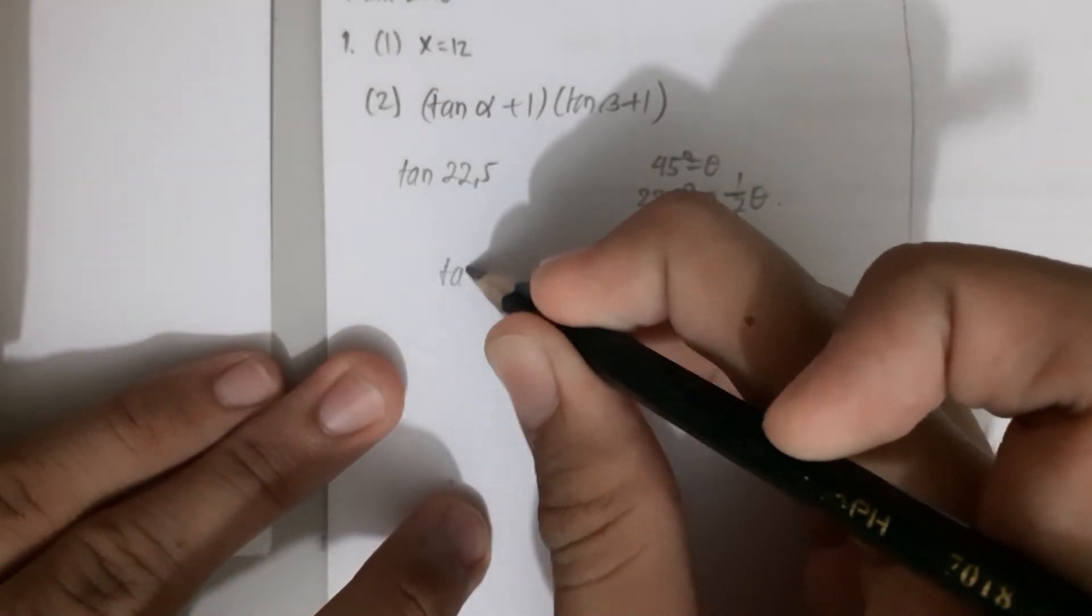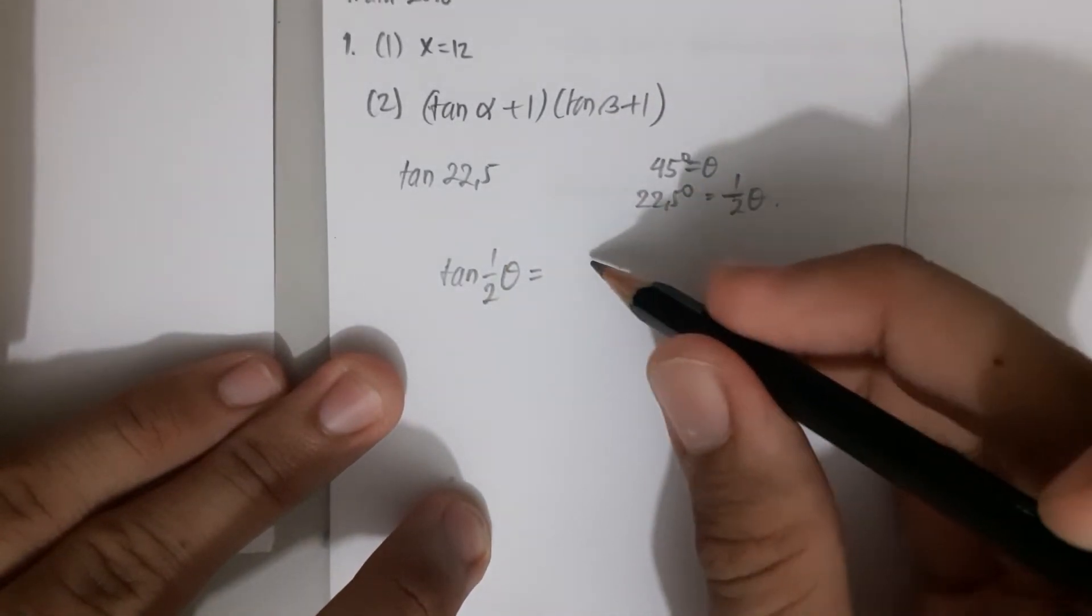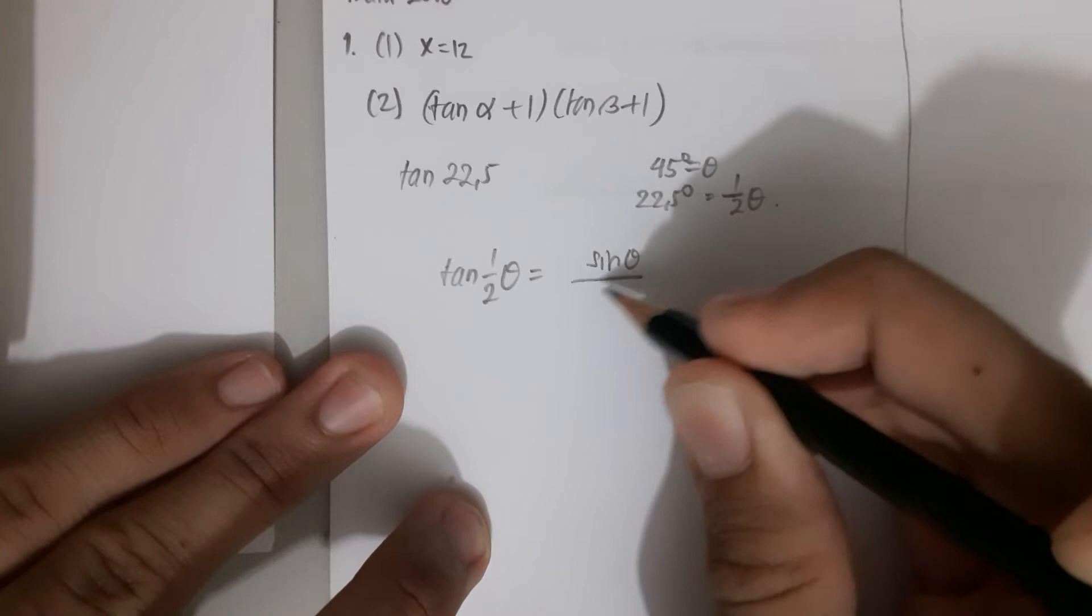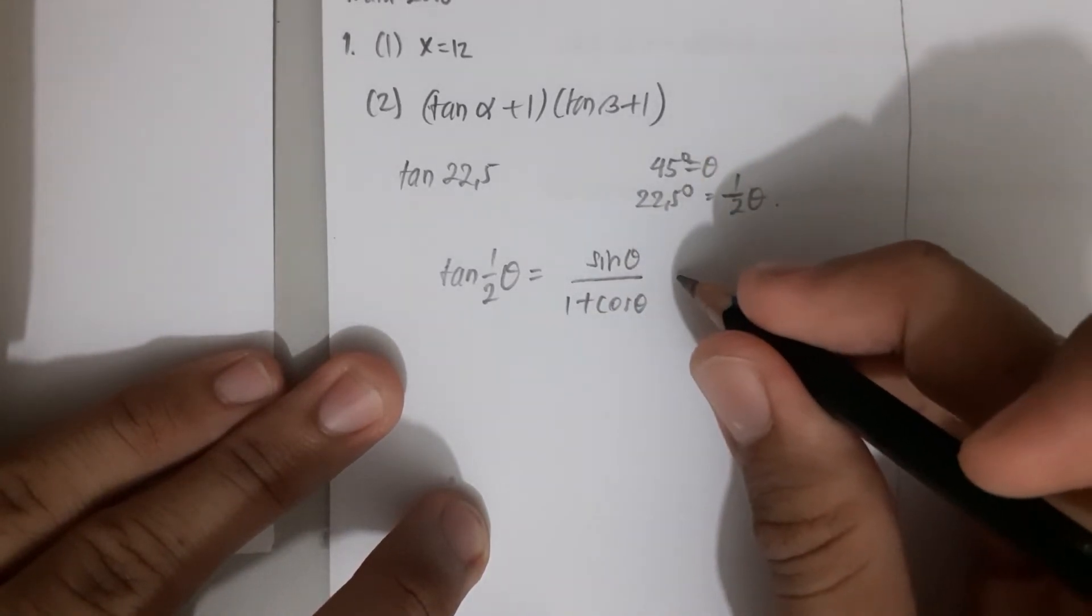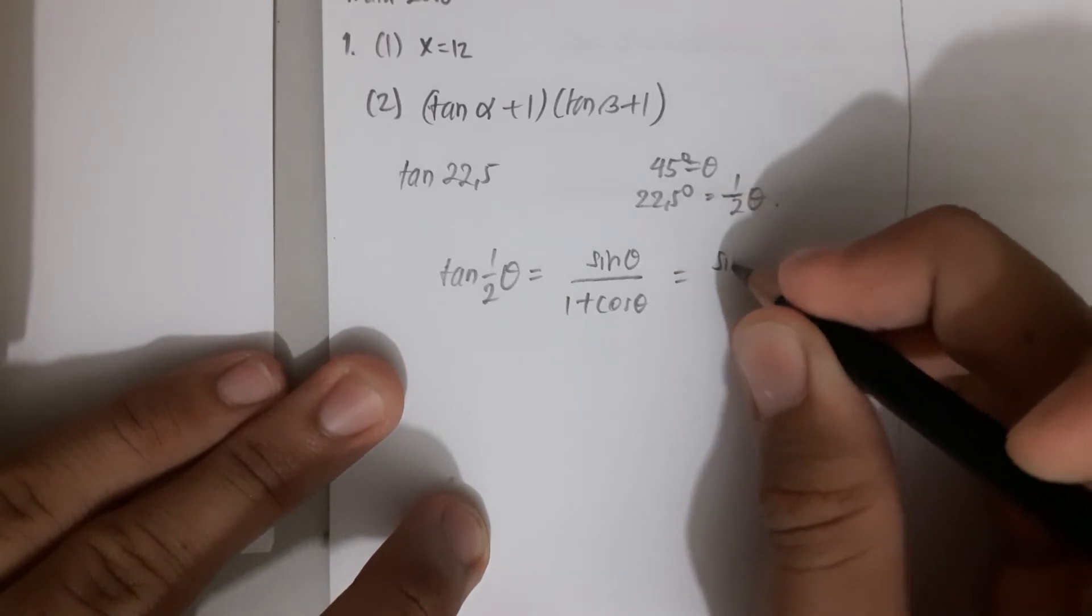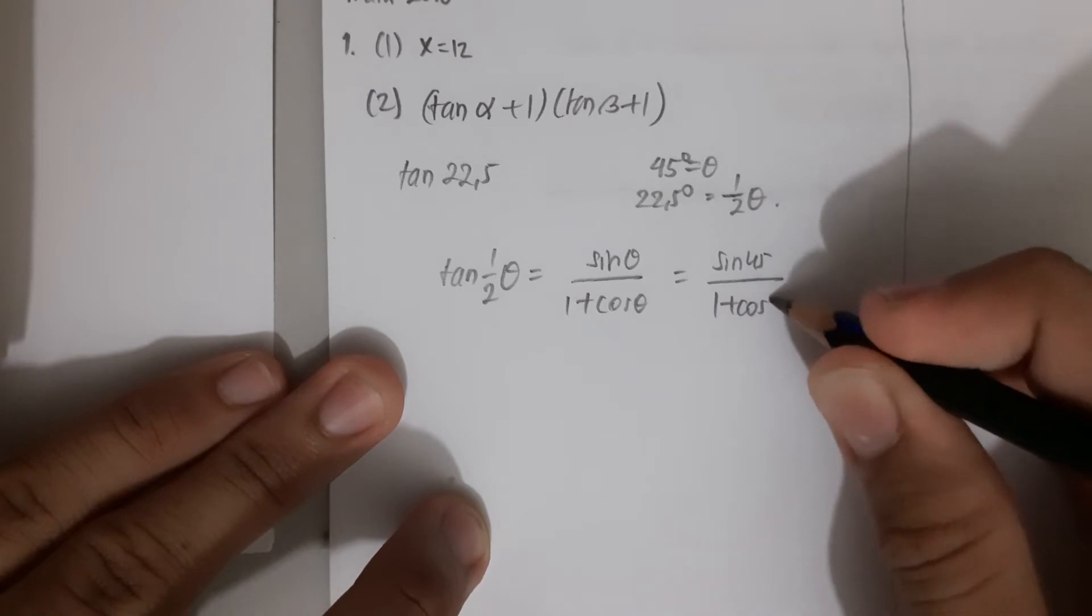If you remember the trigonometric identity of tan(θ/2), it's actually sin θ / (1 + cos θ). We know that sin θ = sin 45° over 1 + cos 45°.